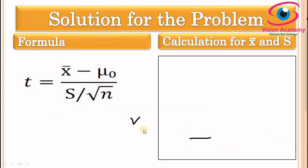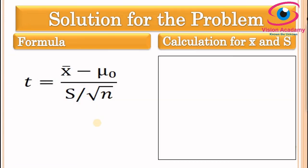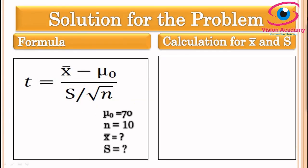The formula for the t-test is: t = (x̄ − μ) / (s / √n), where x̄ is the sample mean, μ is the population mean, s is the sample standard deviation, and n is the sample size. In this problem, we have the population mean μ = 70 and sample size n = 10. We still need to find the sample mean x̄ and sample standard deviation s.